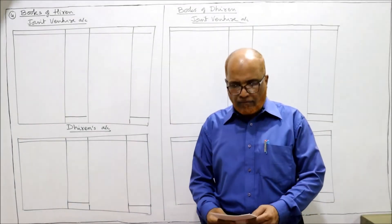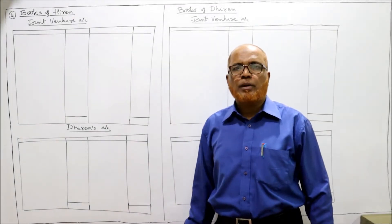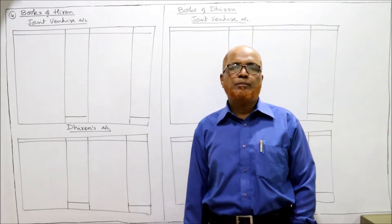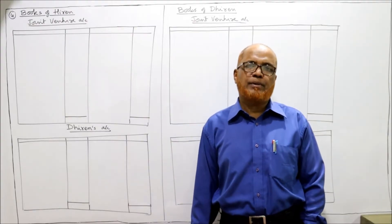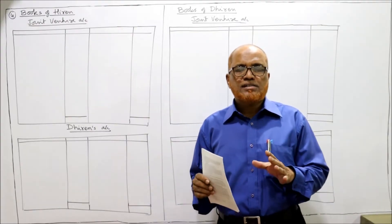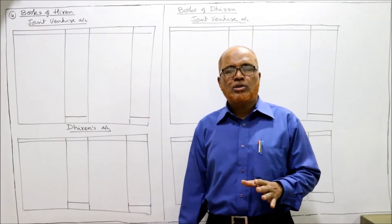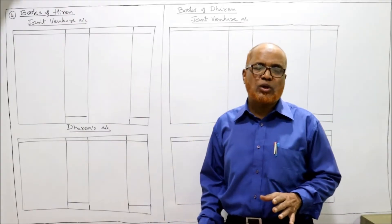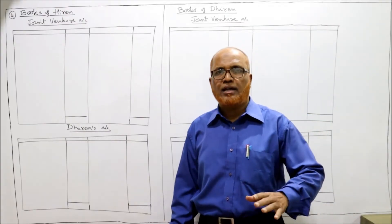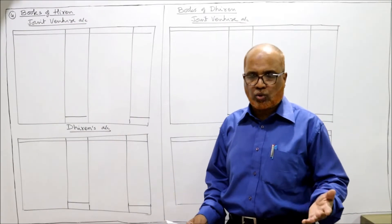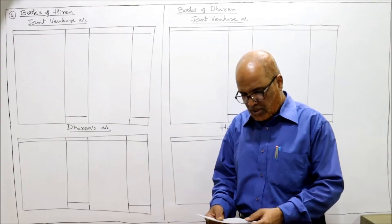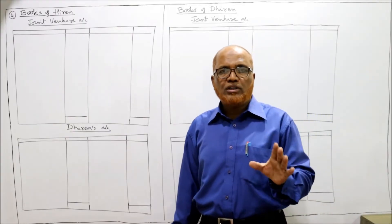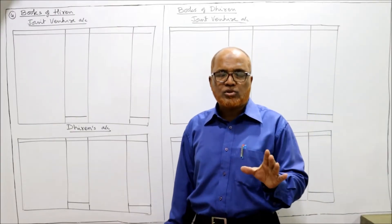Hello students, now we'll start the next problem on joint venture, that is Problem Number 4. So far three problems we have completed and we got some knowledge about how to prepare the joint venture account and the co-venturers account in each co-venturer's books. Now see the fourth problem — hope you have the problems copy from the link under my description.